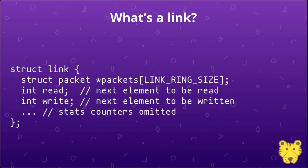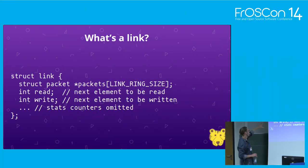There is a stable link and packet ABI. A link is really just a circular ring buffer that stores pointers to packets. It consists of a ring of pointers, a read cursor, and a write cursor, plus some stats counters — and that's really all there is to it. That is the stable ABI; you can access these structs from any language you'd like.